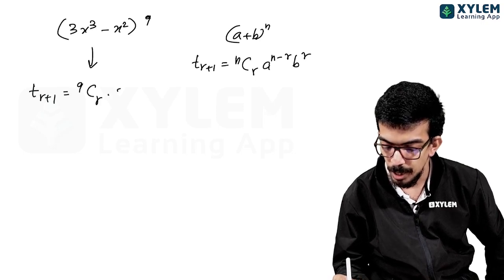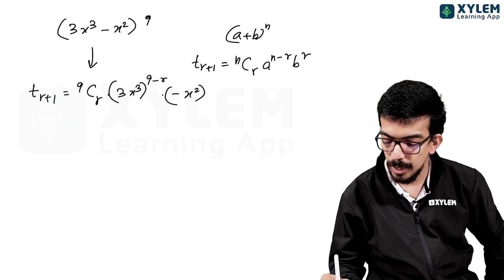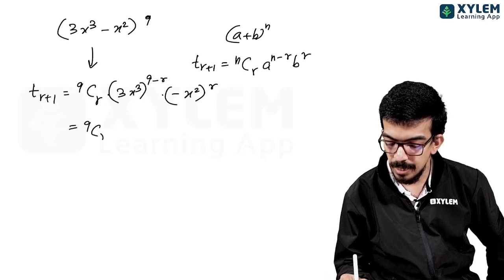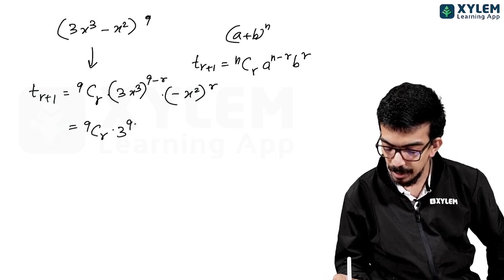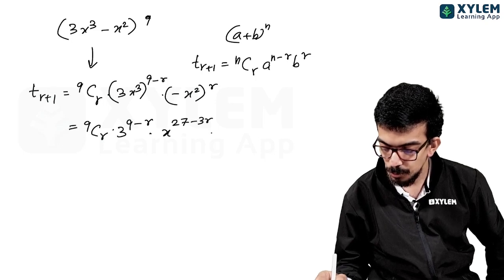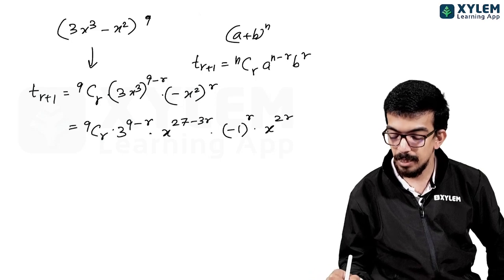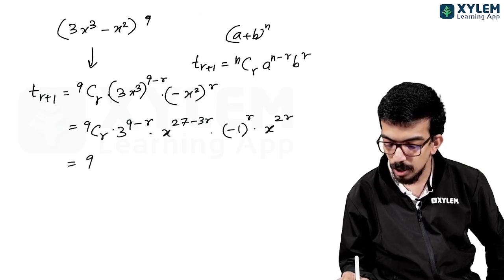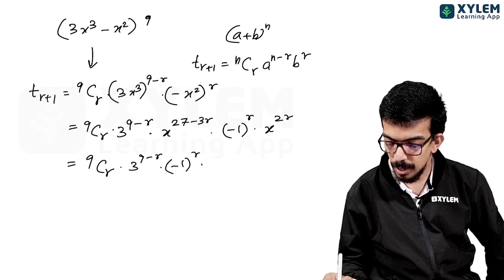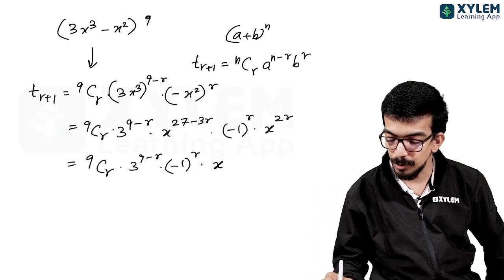This gives 9Cr into 3^(9-r) into x raised to (27 - 3r) into (-1)^r into x raised to 2r. The x-power will be the combination of these, giving coefficient 9Cr into 3^(9-r) into (-1)^r, and x raised to (27 - 3r + 2r).